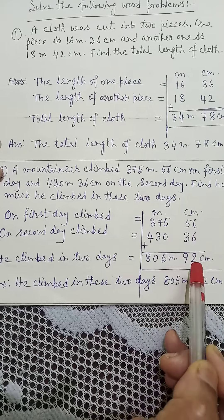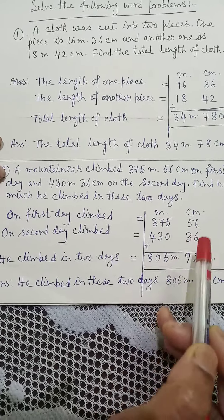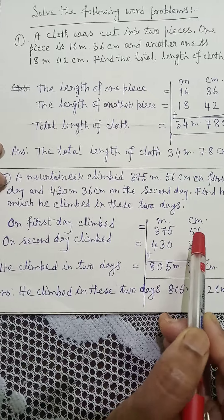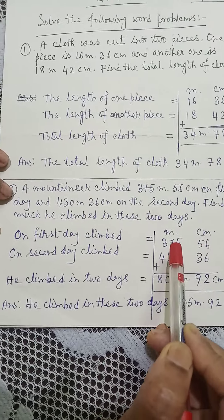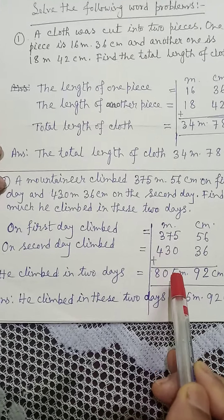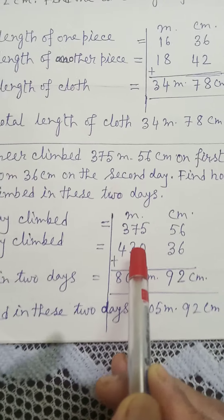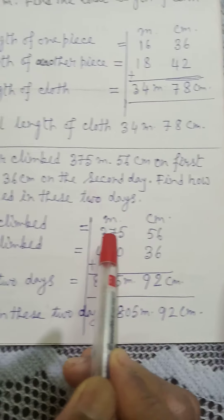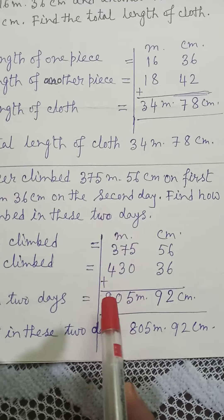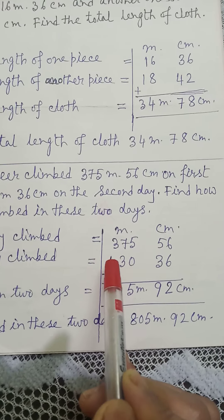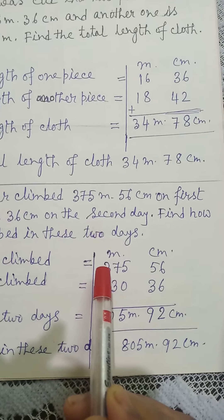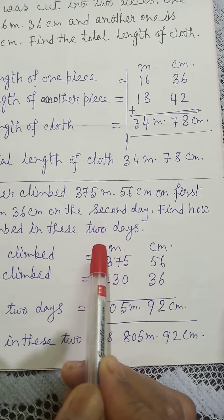6 plus 6 is equal to 12, write 2 and carry 1. 3 plus 5 is 8, plus 1 is 9. 5 plus 0 gives 5. 3 plus 7 is equal to 10, write 0 and carry 1. 4 plus 3 is equal to 7, plus 1 is 8.